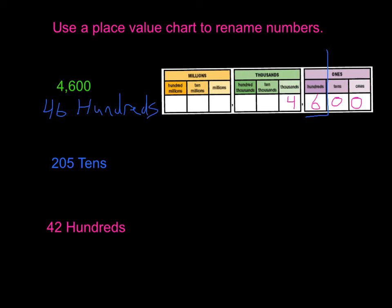However, we can look at it at other things, too. What if I wanted to do it as tens? I would draw my line here for the tens, underneath the tens column, and go up. And as you can see here, we now have 460 tens.